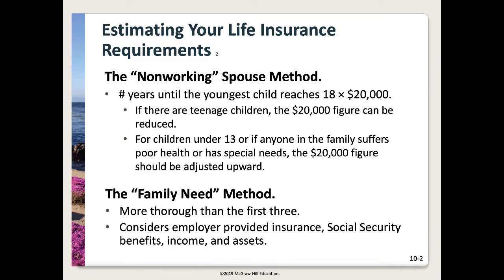The fourth method is the family need method. While the first three methods assume a typical family and ignore factors like Social Security and liquid assets, this one requires diving deeply into all of your insurance needs. It considers things like employer-provided insurance, Social Security benefits, income, and assets.